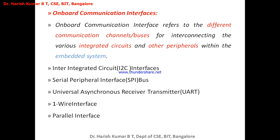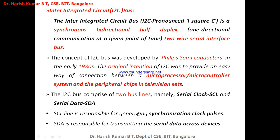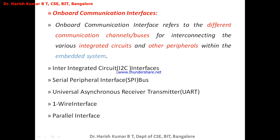Now we will focus on onboard communication interfaces. These connect the peripherals and components within the embedded system. The examples are: I2C bus (Inter-Integrated Circuit), SPI (Serial Peripheral Interface) bus, UART (Universal Asynchronous Receiver Transmitter), One Wire interface, and Parallel interface. We will now discuss the I2C bus in detail.